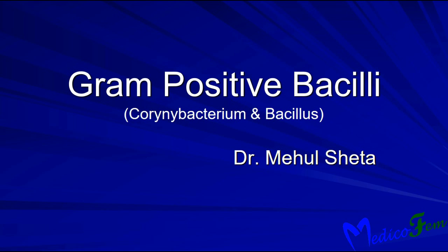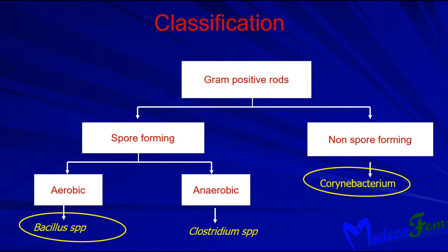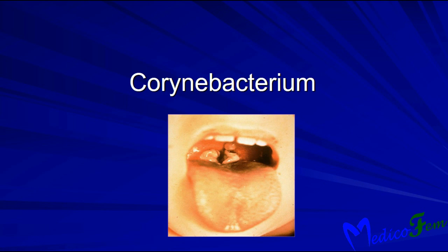Welcome back. Today's topic is gram-positive bacilli. We will cover mainly Corynebacterium and Bacillus species. Gram-positive rods can be classified as spore-forming and non-spore-forming. Spore-forming are further divided into aerobic and anaerobic: aerobic includes Bacillus, anaerobic includes Clostridium. Non-spore-forming includes Corynebacterium. We are covering only Bacillus and Corynebacterium in this video.